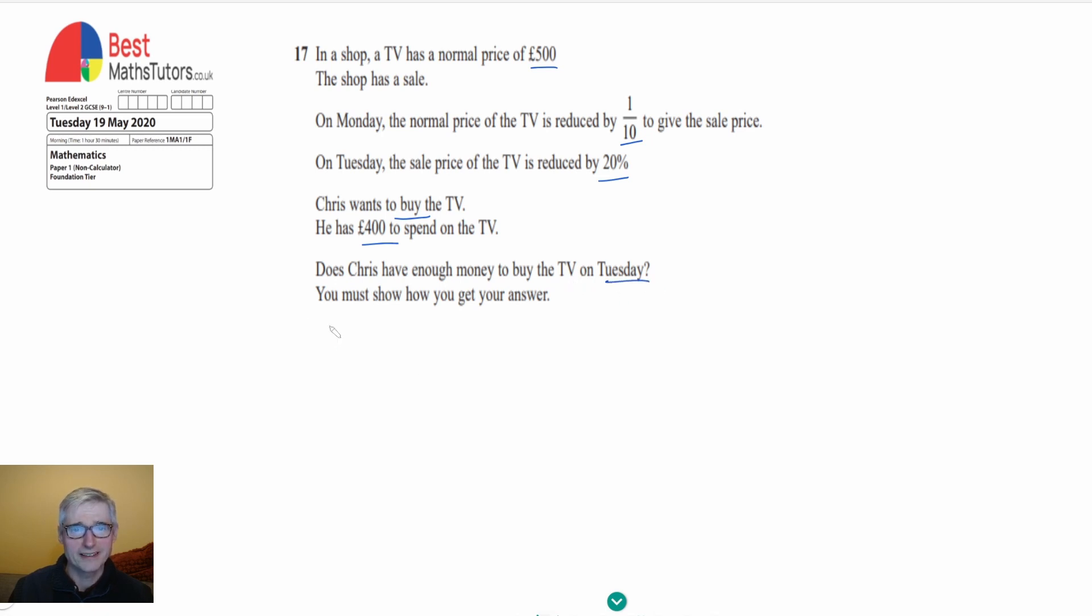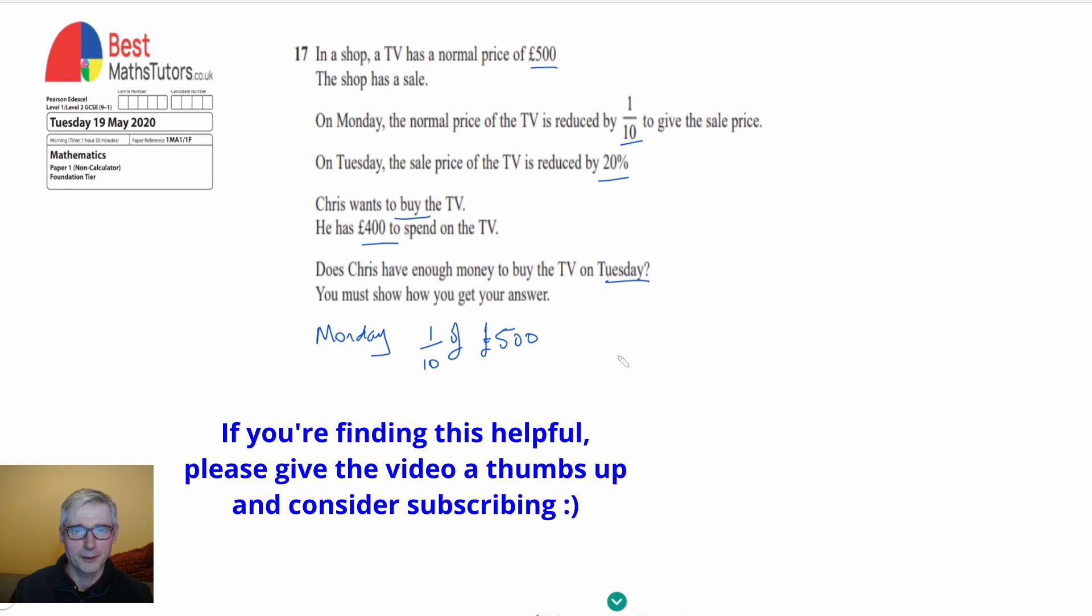The first thing that we're going to need to do is work out what the price will be on the Monday. To do that we've got to find out what one-tenth of £500 is and that's quite easy because if we're finding one-tenth of a number all we need to do is move the decimal point back by one place.